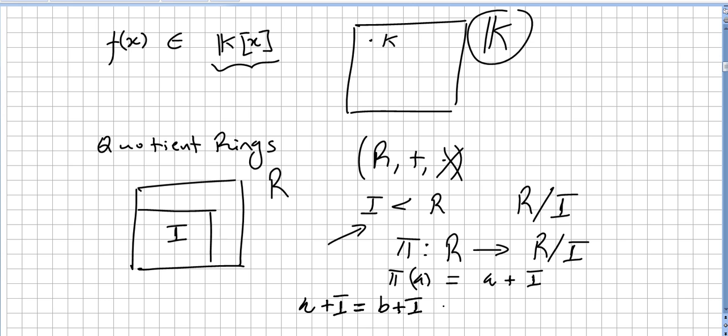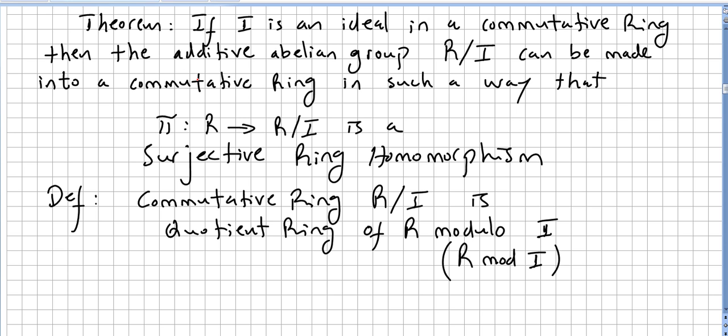All this in the quotient group, if and only if a minus b is in the subgroup or the ideal. This leads us to a very important theorem.